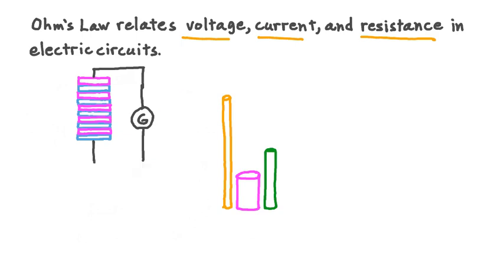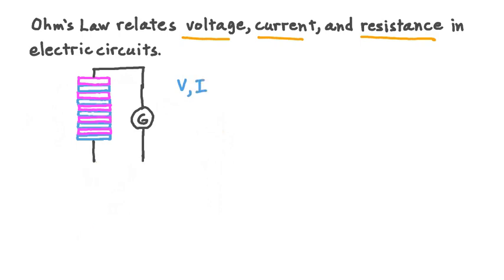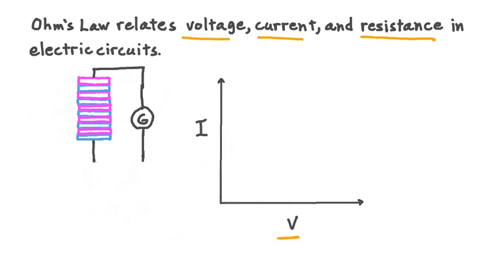Then once he was finished making the whole series of measurements for a given conductor, he would move on to another one from the collection and do the same thing — run through a series of potential differences across the circuit and record the current that would flow through it each time. After having done this with all the conductors, Ohm had gathered quite a lot of corresponding voltage and current data points. Ohm saw that these points could be plotted on a graph. In his experiment, the independent variable was the voltage applied across the circuit, and the dependent variable was the current that would flow through the circuit as a result.